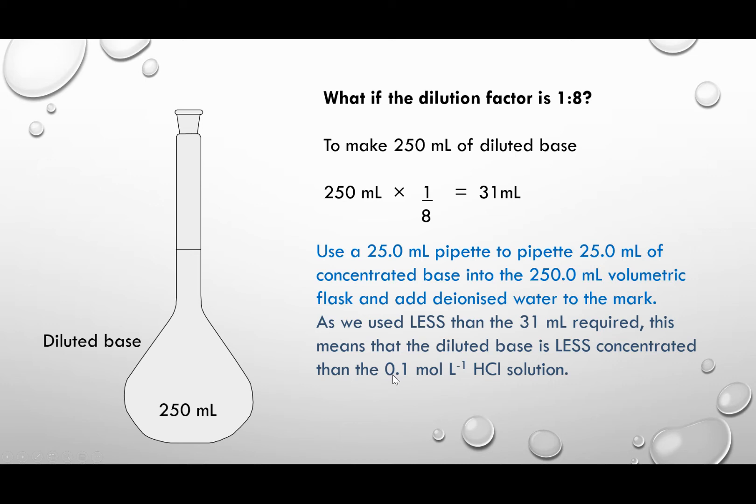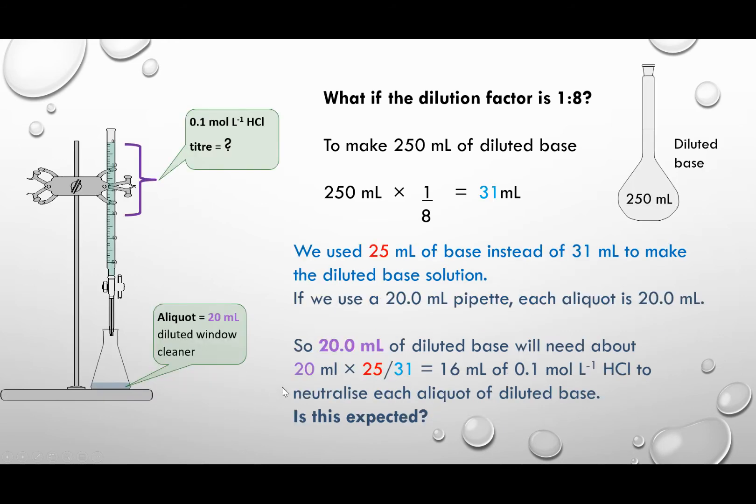And this has an implication for our titration because it means we're not going to get identical values. So how much of this 0.1 mol per liter of acid will we need to neutralize each aliquot of the diluted base?